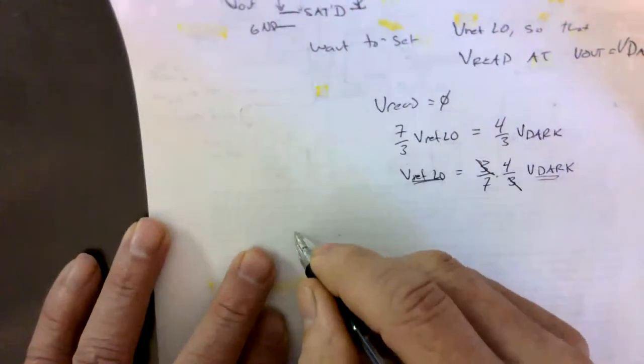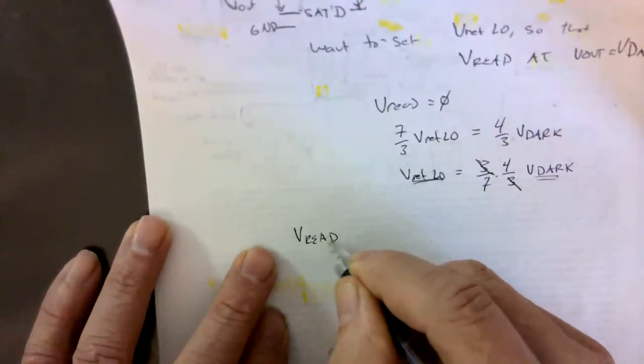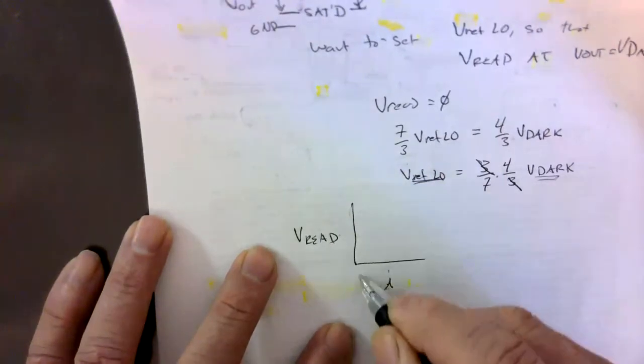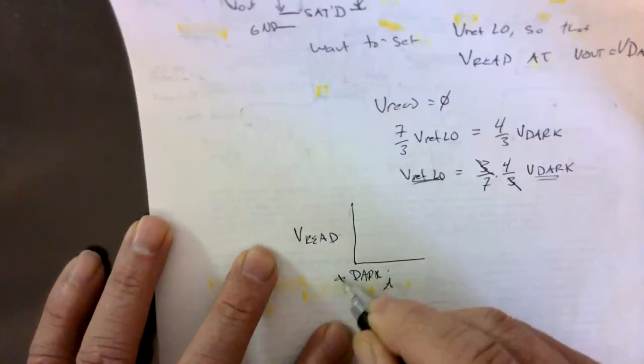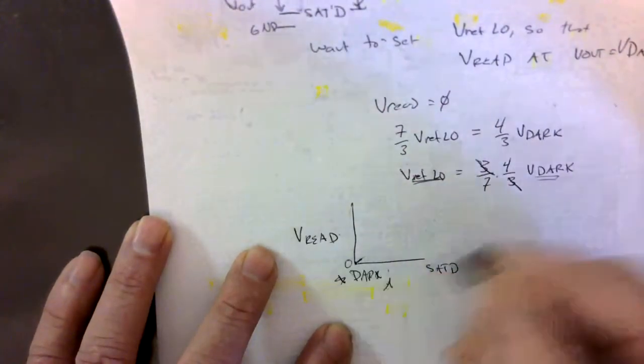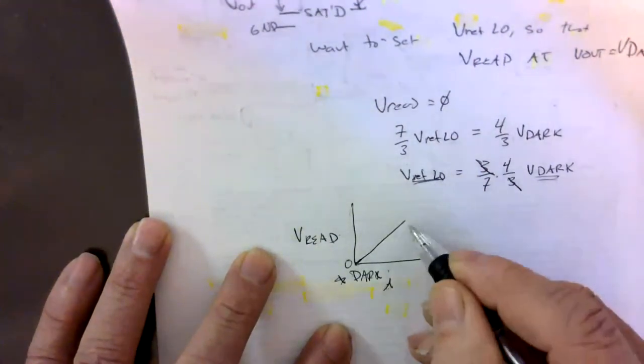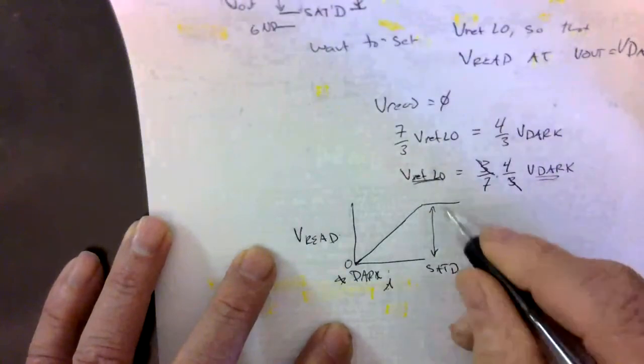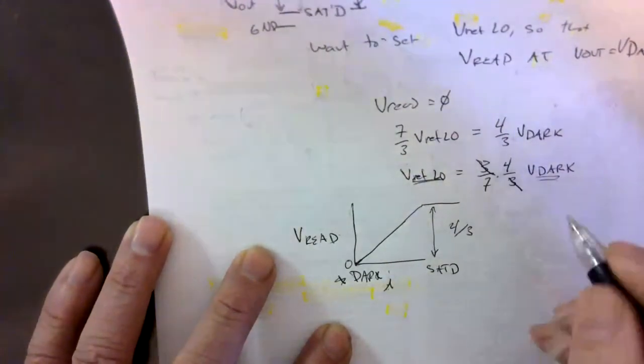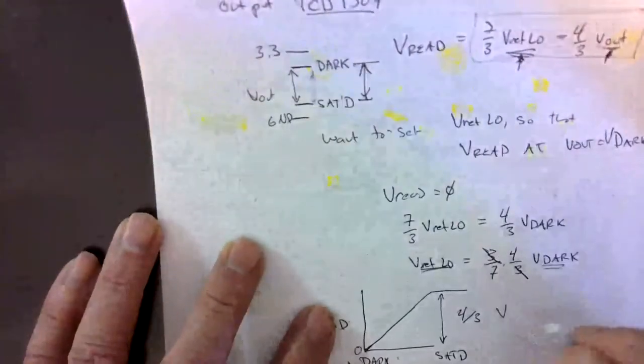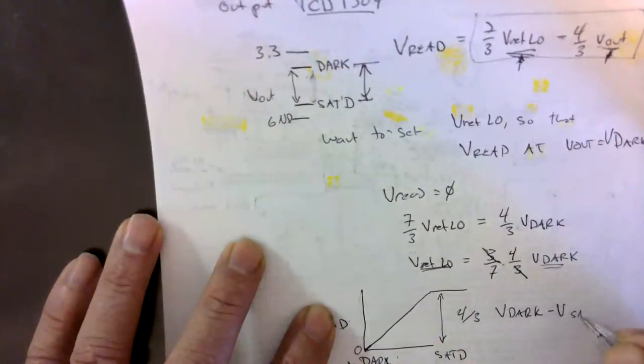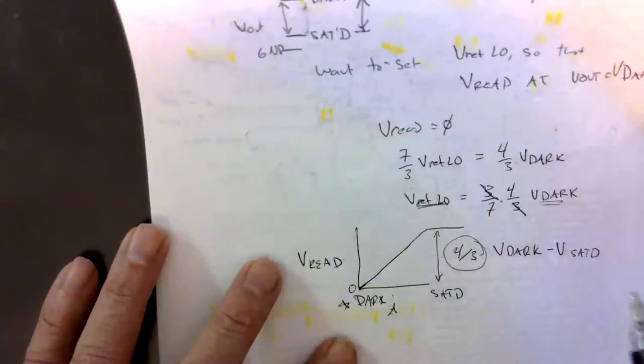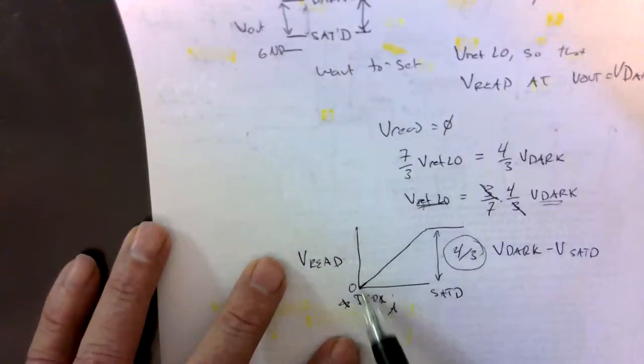So the output V read in this case when we have incident light ranging from dark to saturated is going to start at zero and it's going to go up until it hits saturation. That is 4 thirds of V dark minus V saturated. By changing our resistors we could change this amplification. By changing the reference voltage low we can change where we are here.